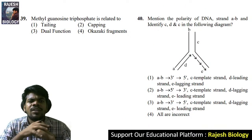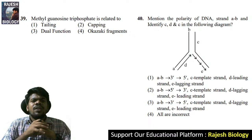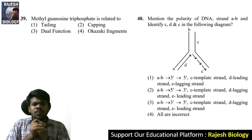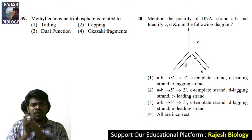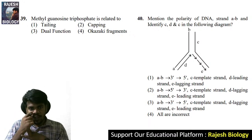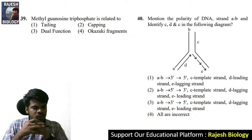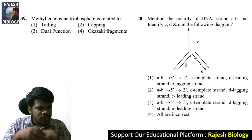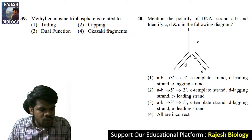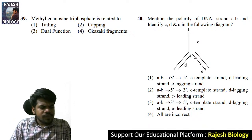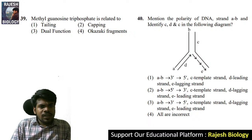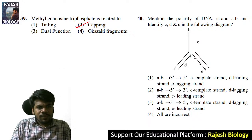Question 39: methyl guanosine triphosphate is related to what? It is related to capping — the capping of mRNA. Come to the 40th question.